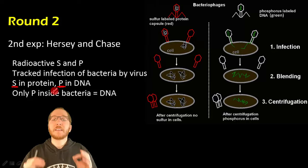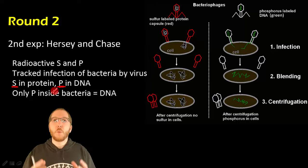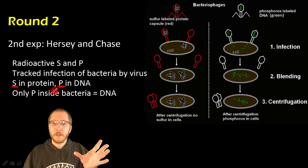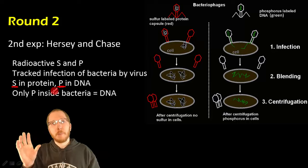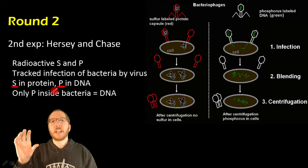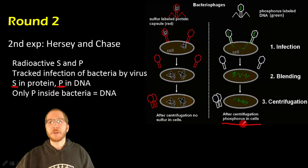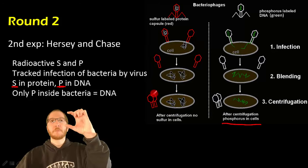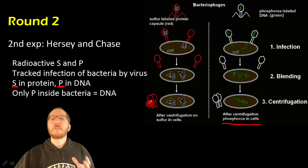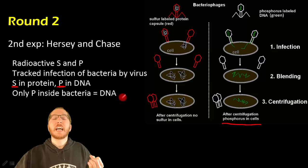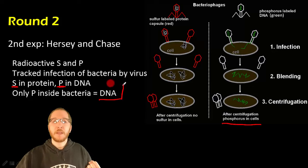They knew viruses work by reprogramming a cell, so the genetic information had to enter the cell to reprogram it. Therefore, whatever is present inside the bacteria must be the genetic material. They ran the experiment — infecting bacteria with viruses carrying radioactive protein, and separately with viruses carrying radioactive DNA. After centrifugation, they found that only the DNA was actually inside the bacteria. The protein was in the liquid up top; it never entered the bacteria. Therefore, if the only thing that entered the bacteria was DNA, DNA must be the genetic material.